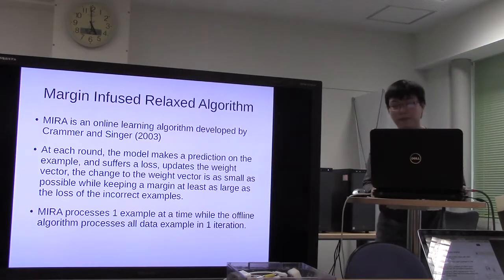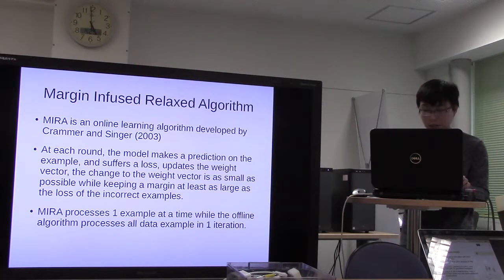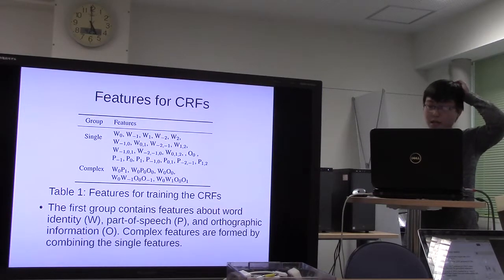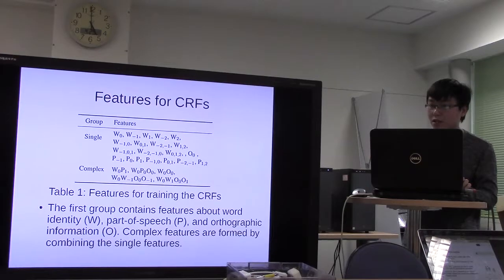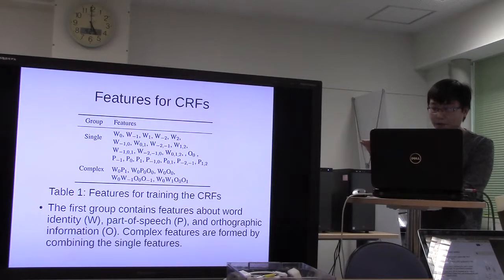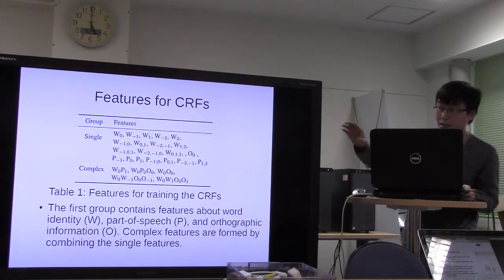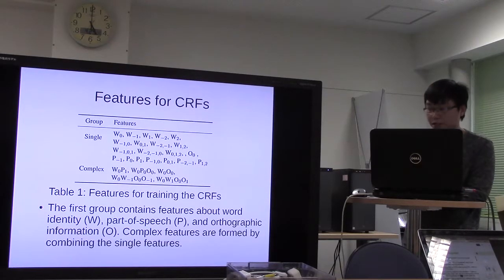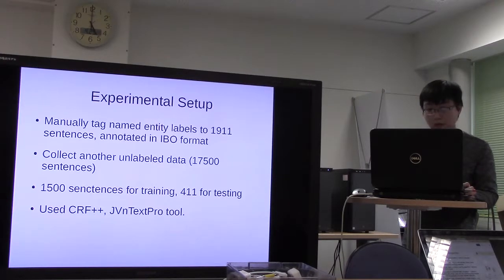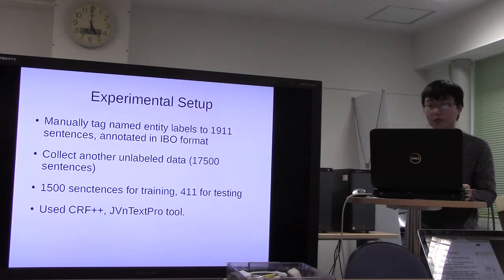MIRA processes one example at a time, while offline algorithms process all data samples in one iteration. There are some features for the CRF model. The first group contains features about the word identity, the context for bandwidth, and other sample functions. The second group is about complex features formed by combining single features together.